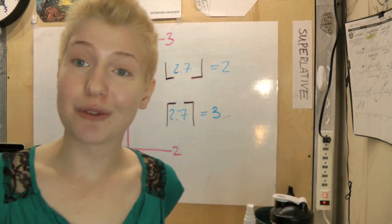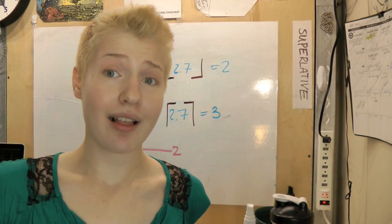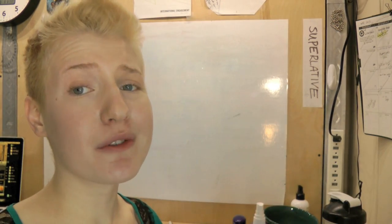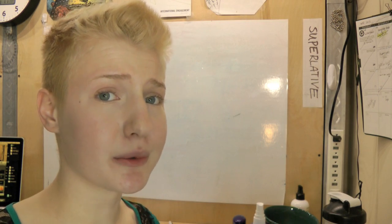Alright, so now that you understand what a floor and a ceiling function does, let's talk about proofs. Something interesting about proofs in mathematics is that it's very, very difficult to prove that something is generally true. However, it's super duper easy to prove that something is false just using one counterexample and you're done. But don't believe me. We'll prove something is false and something is true.